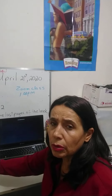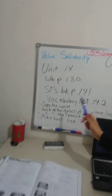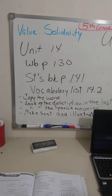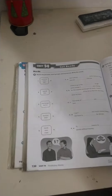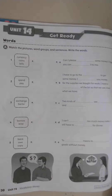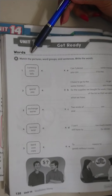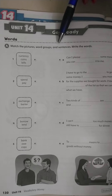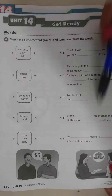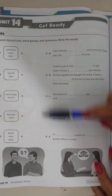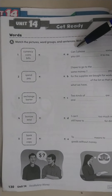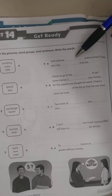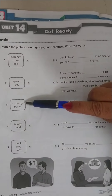Now we are going to go to the workbook. Please open your workbooks on page 130. You have to match the picture, word, groups, and sentences, and write the words here. Remember that when you match, you also have to write the letter next to the number. Here we can see we have two options.